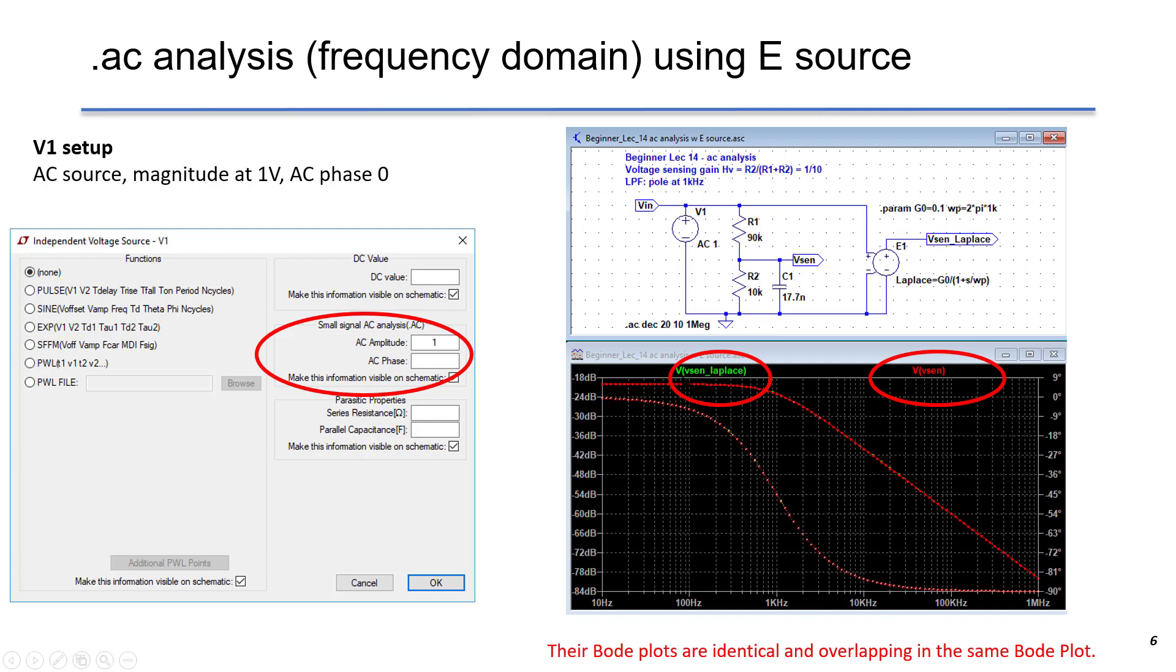In the Bode plot, we can see the Vsense Laplace is overlapping with Vsense in this case. That means this Laplace works very well as we expected.